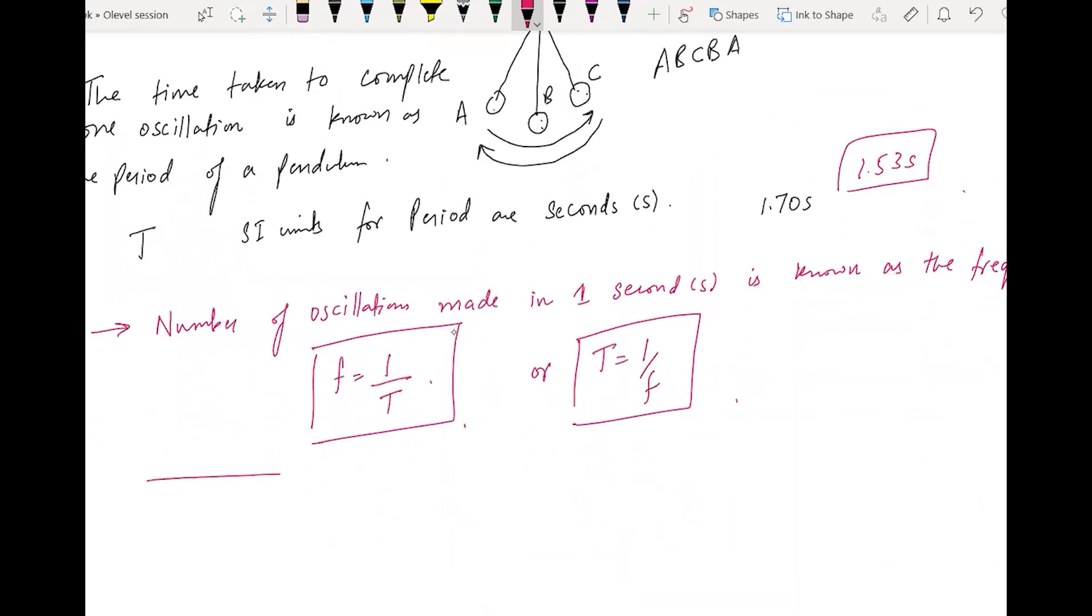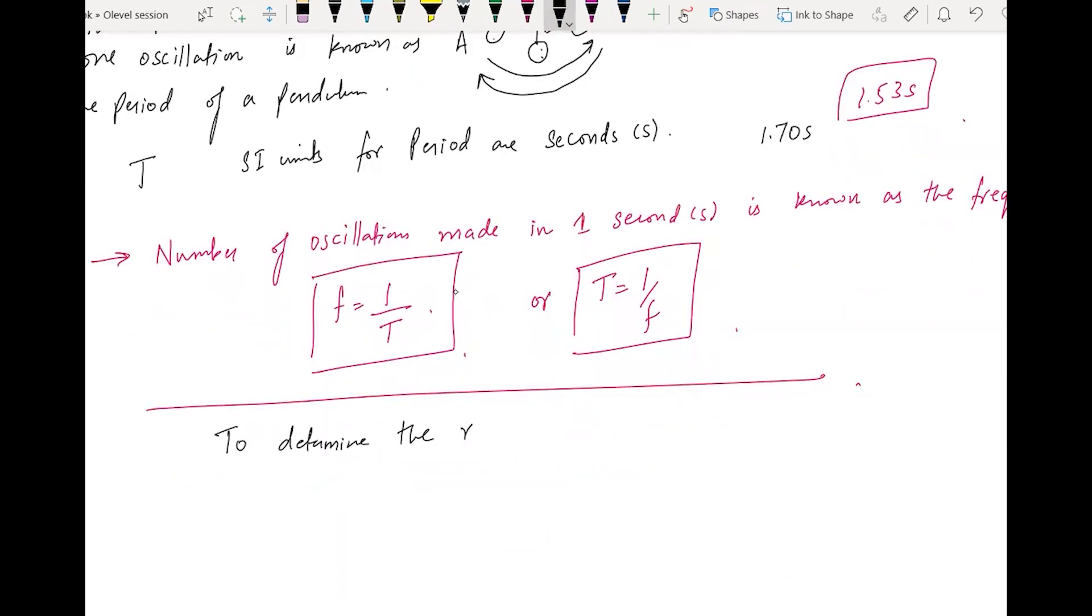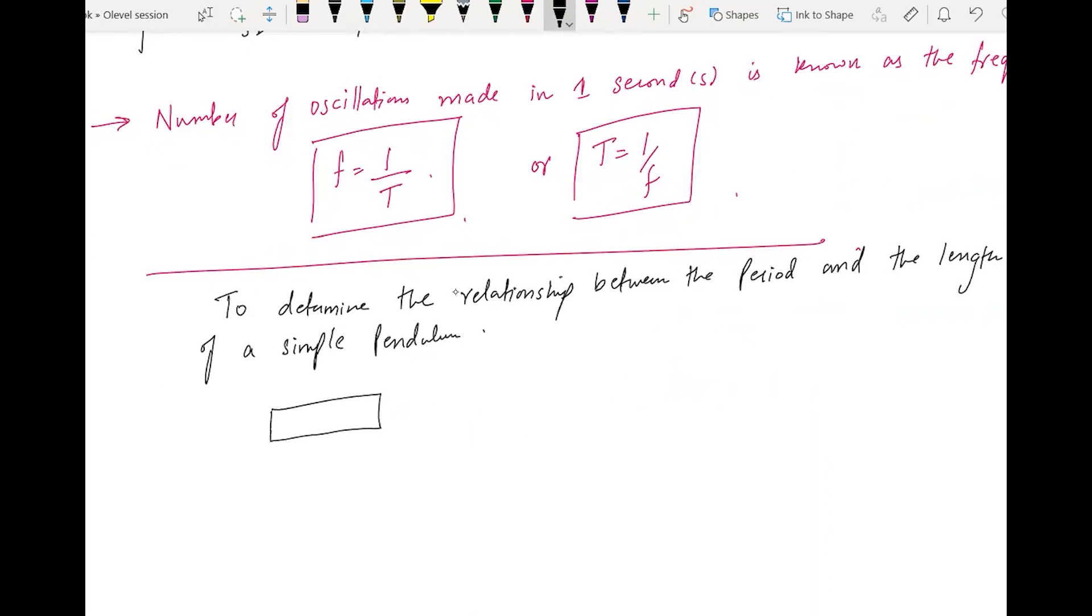One more important thing is how to determine the relationship between period and length of a simple pendulum. For example, I have a pendulum here, and remember that whenever you have to measure the length of the pendulum, it is from the center of the bob till here. If you look at the side view, it looks like this.